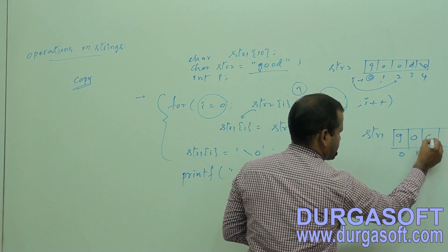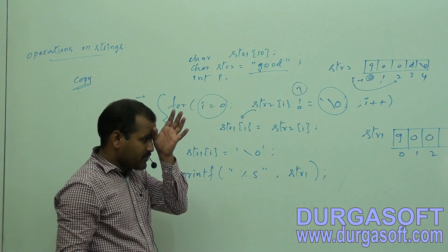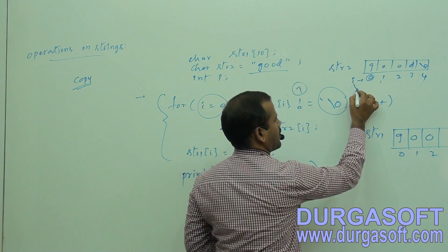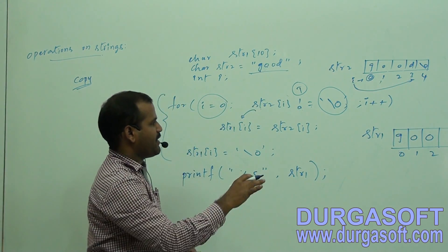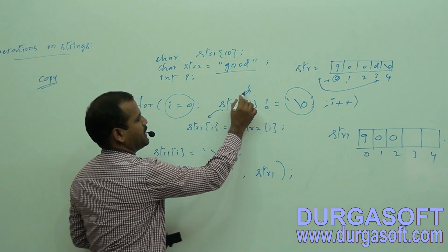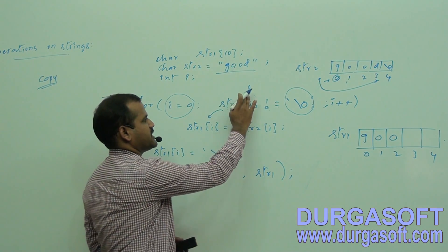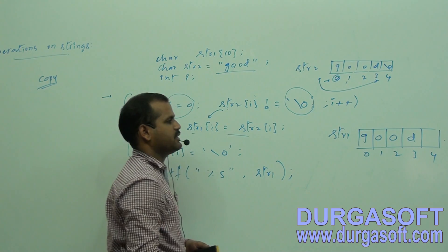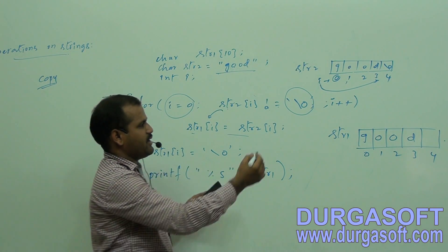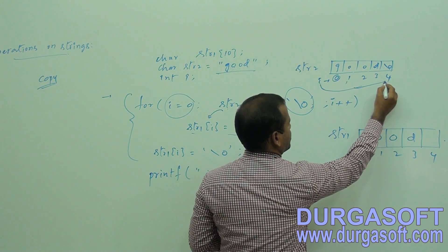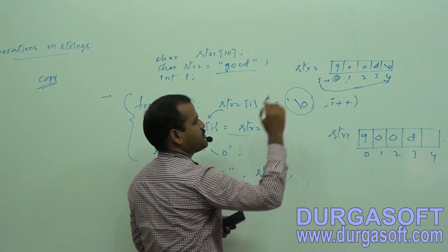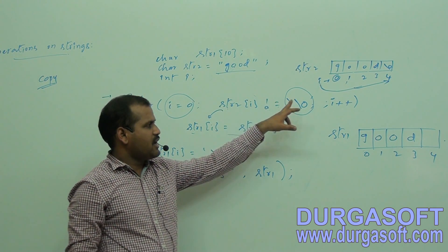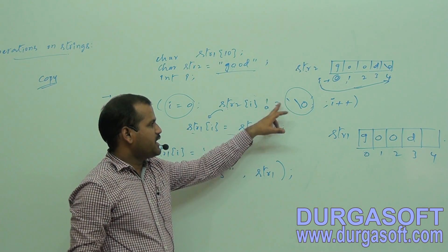i is incremented to 3. string2[3] is 'd', which is not equal to the null character, so the condition is true. 'd' is copied into string1. Then i is incremented to 4. string2[4] is the null character, so the condition — null character not equal to null character — fails. The loop exits.